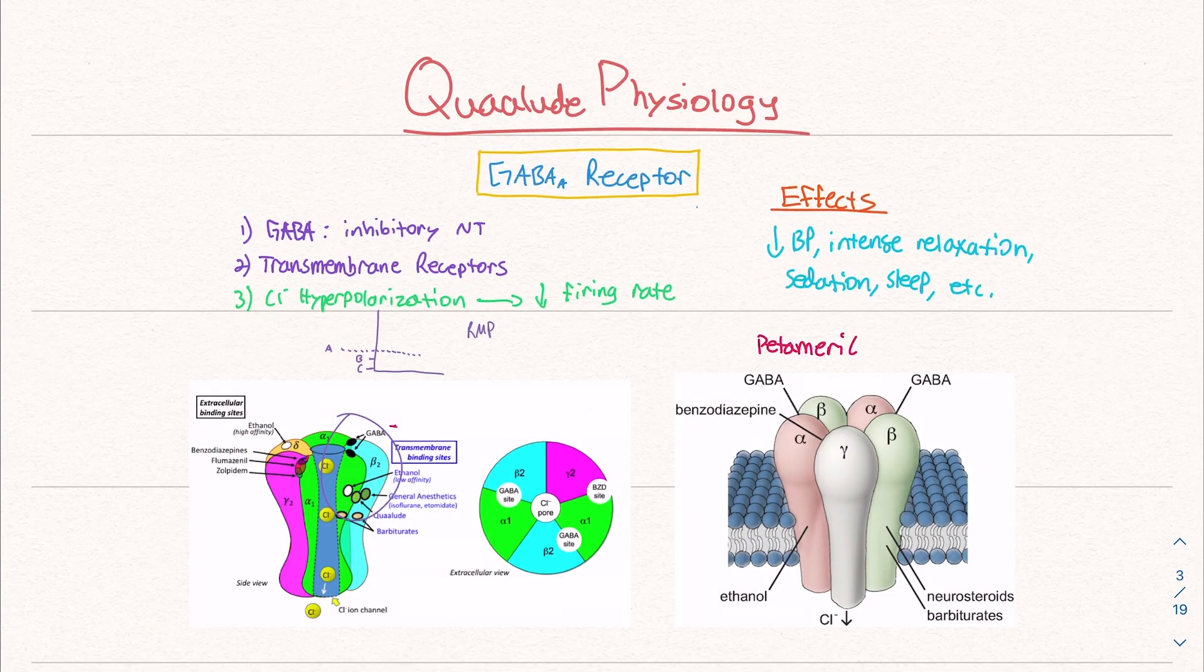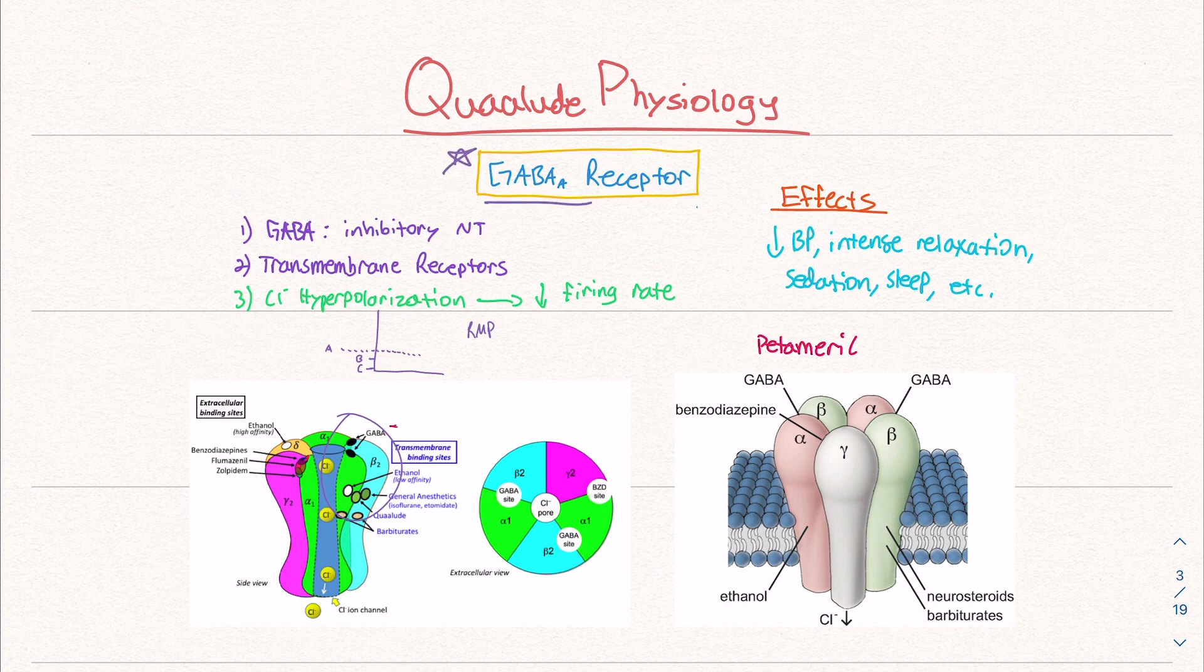Quaaludes are very interesting in how they work. So let's get a little deep here. I'm going to try my best to explain this. I mentioned that Quaaludes act on this thing called the GABA receptor, specifically the GABA-A receptor. So let's talk about that a little bit. GABA, this molecule, is an inhibitory neurotransmitter.